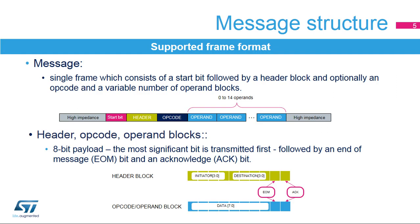The supported frame format consists of a start bit followed by a header block and, optionally, an opcode and then a variable number of operand blocks. Header, opcode, and operand blocks consist of an 8-bit payload, where the most significant bit is transmitted first, followed by an end-of-message, or EOM bit, and an acknowledge, or ACK bit.